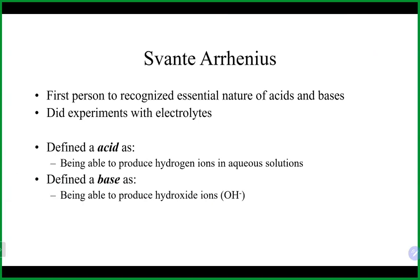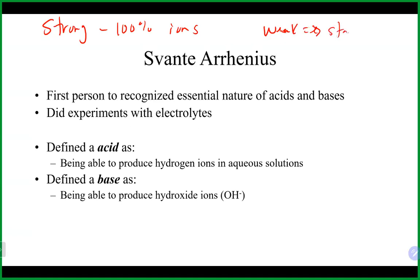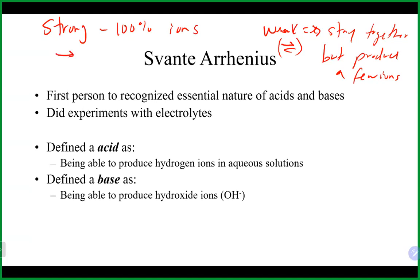Early work on acids and bases was done by Arrhenius. He did a lot of work with electrolytes — substances that, when they go into solution, break apart into ions. Strong electrolytes 100% break apart in solution into ions, while weak electrolytes basically stay together but produce a few ions. Those are usually shown with reversible arrows. Strong acids and strong bases are really strong electrolytes; weak acids and weak bases are really weak electrolytes.